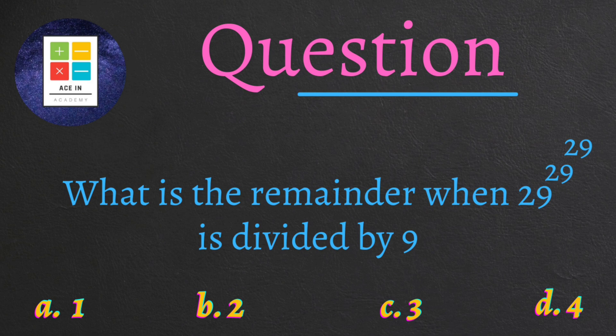What is the remainder when 29 raised to power 29 raised to power 29 is divided by 9? We are provided four options: Option A is 1, option B is 2, option C is 3, and option D is 4.